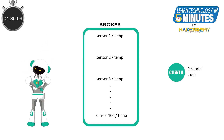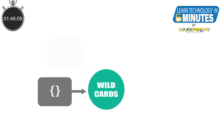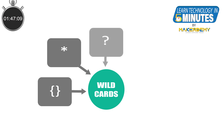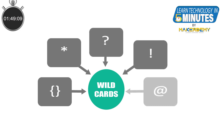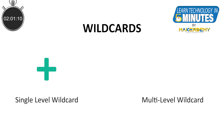What if we can subscribe to multiple topics at the same time by sending a single subscribe packet? Yes, this can be done using wildcards in MQTT. Wildcards, also known as wildcard characters, are symbols used as placeholders to replace or represent one or more characters. There are two different kinds of wildcards: a single-level wildcard represented by a plus symbol, and a multi-level wildcard represented by a hash symbol.